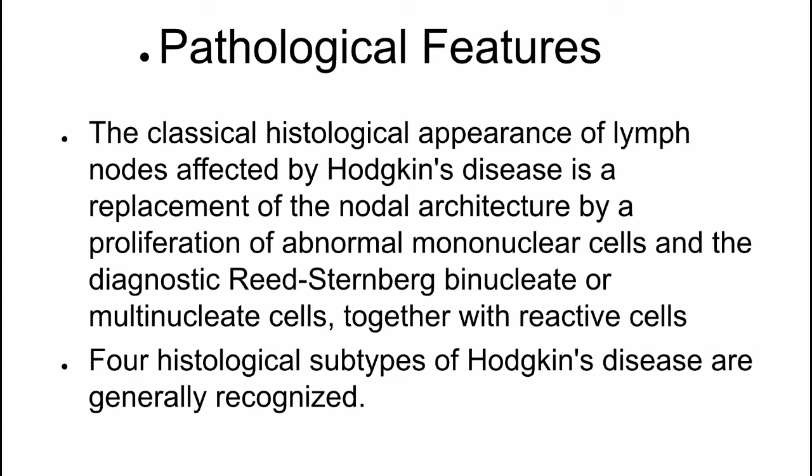Pathological features: The classical histological appearance of lymph nodes affected by Hodgkin's disease is a replacement of the nodal architecture by a proliferation of abnormal mononuclear cells and the diagnostic Reed-Sternberg binucleate or multinucleate cells, together with reactive cells.